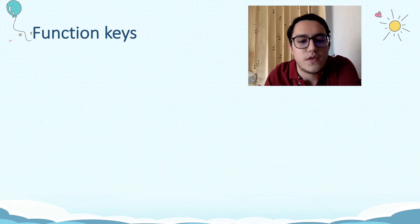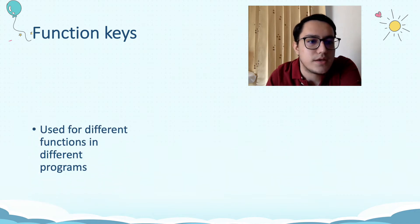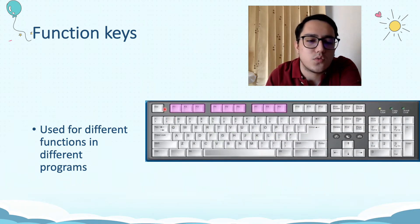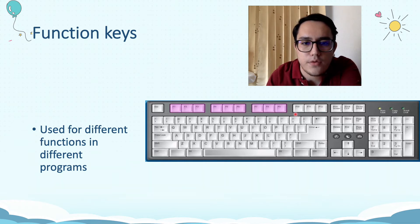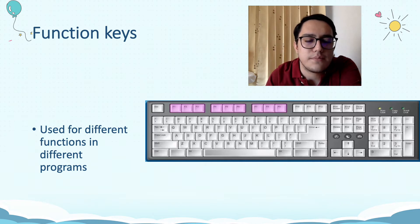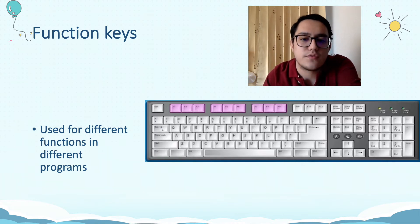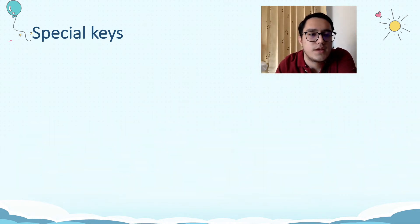Next, we are talking about the function keys. Function keys are used for different functions in different programs. These are your function keys, right on the top: F1, F2, F3, F4, F5, F6, F7, F8, F9, F10, F11, F12. So this top row is all the function keys. Function keys have different functions — meaning they do different things depending on where you use them. In each program, they might have different things to do, different work, different jobs to do.